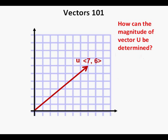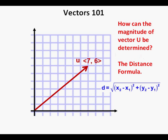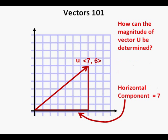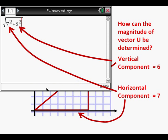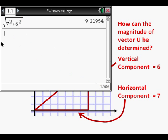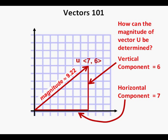How can the magnitude or size of vector u be determined? To determine the magnitude of a vector, we can use the distance formula, which is a coordinate plane application of the Pythagorean theorem. We can also do this by breaking this vector into a right triangle. This vector has a horizontal component of 7 and a vertical component of 6 in length. Here we enter the square root of 7 squared plus 6 squared into the calculator, press enter, and find the magnitude is about 9.22 units, rounded to the nearest hundredth place.